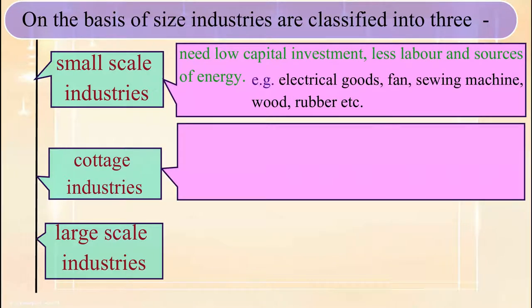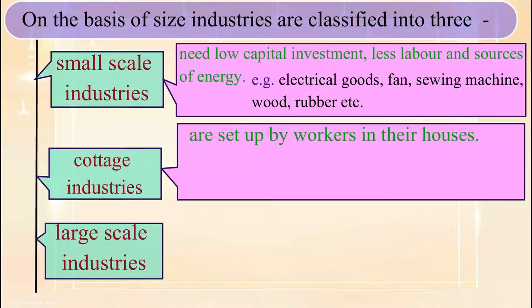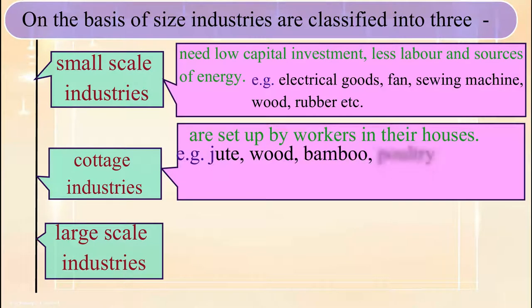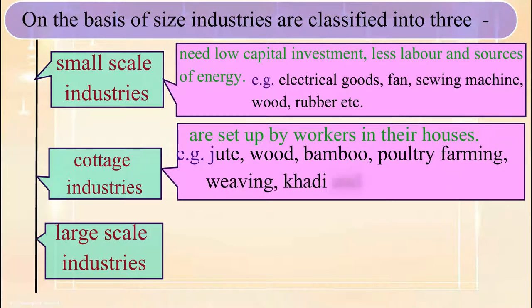Cottage industries are set up by workers in their houses. For example, jute, wood, bamboo, poultry farming, weaving, khadi and handloom, etc.